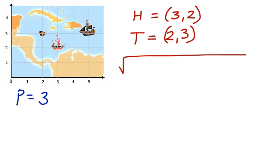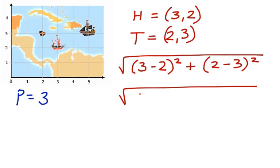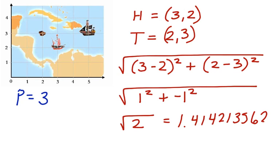Now let's use the distance formula. We have 3 minus 2 squared plus 2 minus 3 squared. That gives us the square root of 1 squared plus negative 1 squared, which is the square root of 2. The square root of 2 is 1.4142135662, and it keeps on going. So we're going to round this to be approximately 1.4 units. So we can say that the hero ship is equal to 1.4 units away.